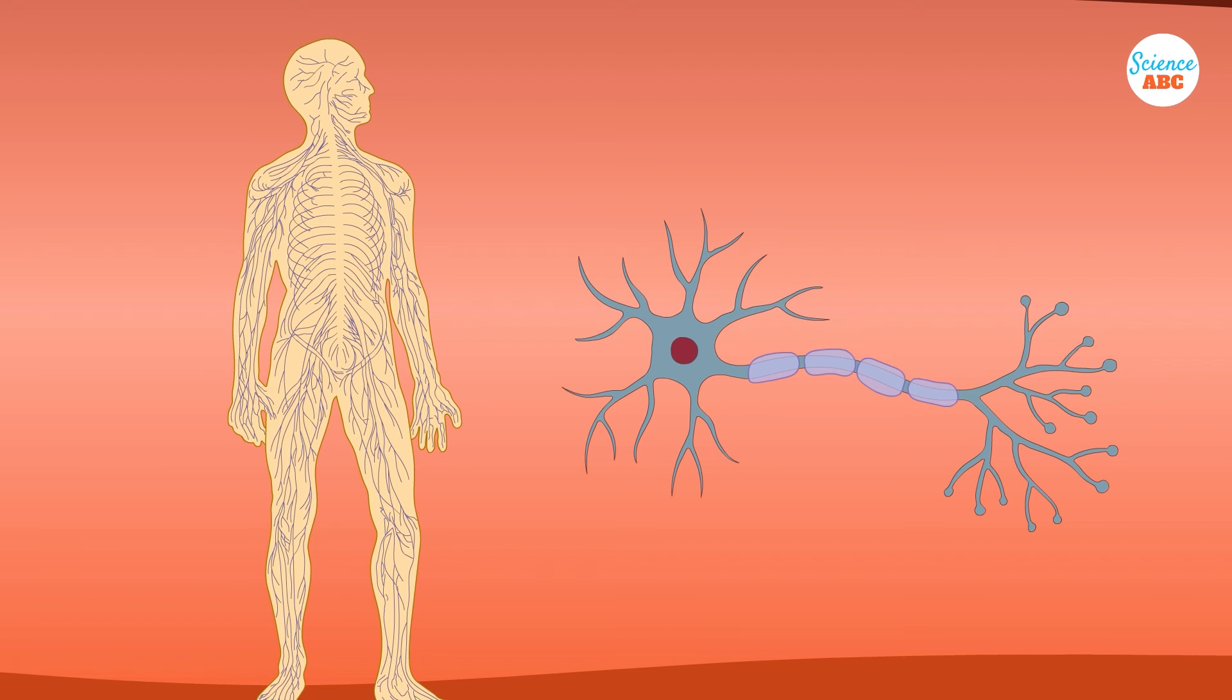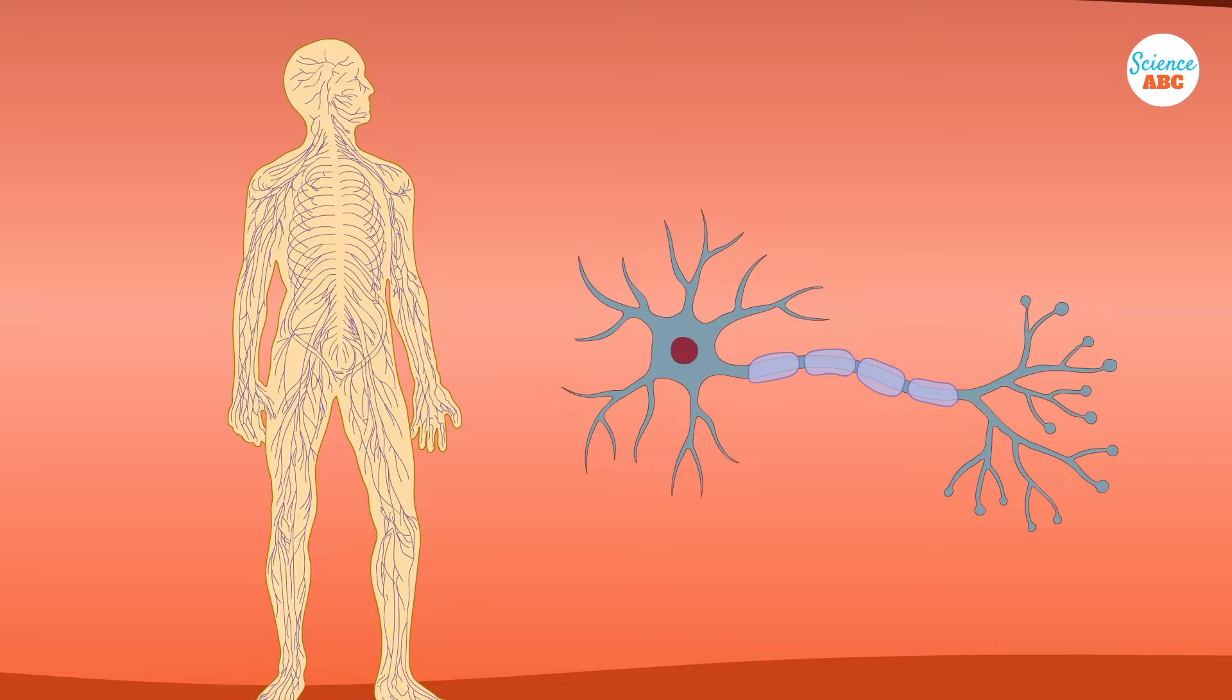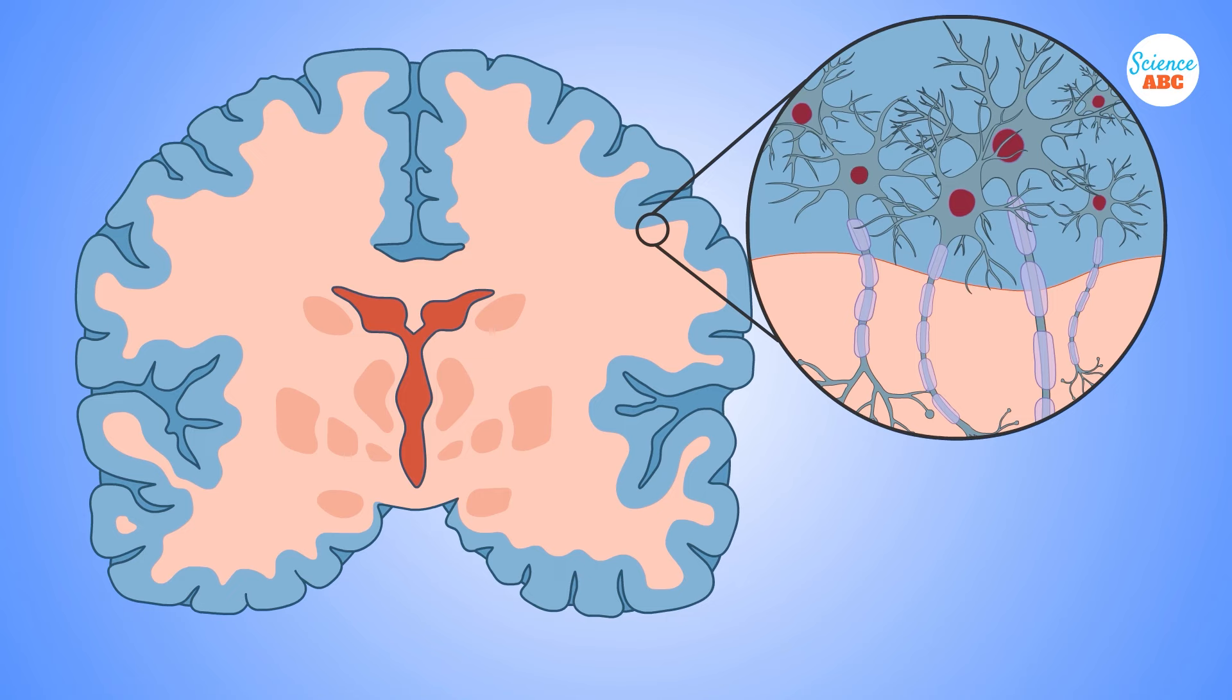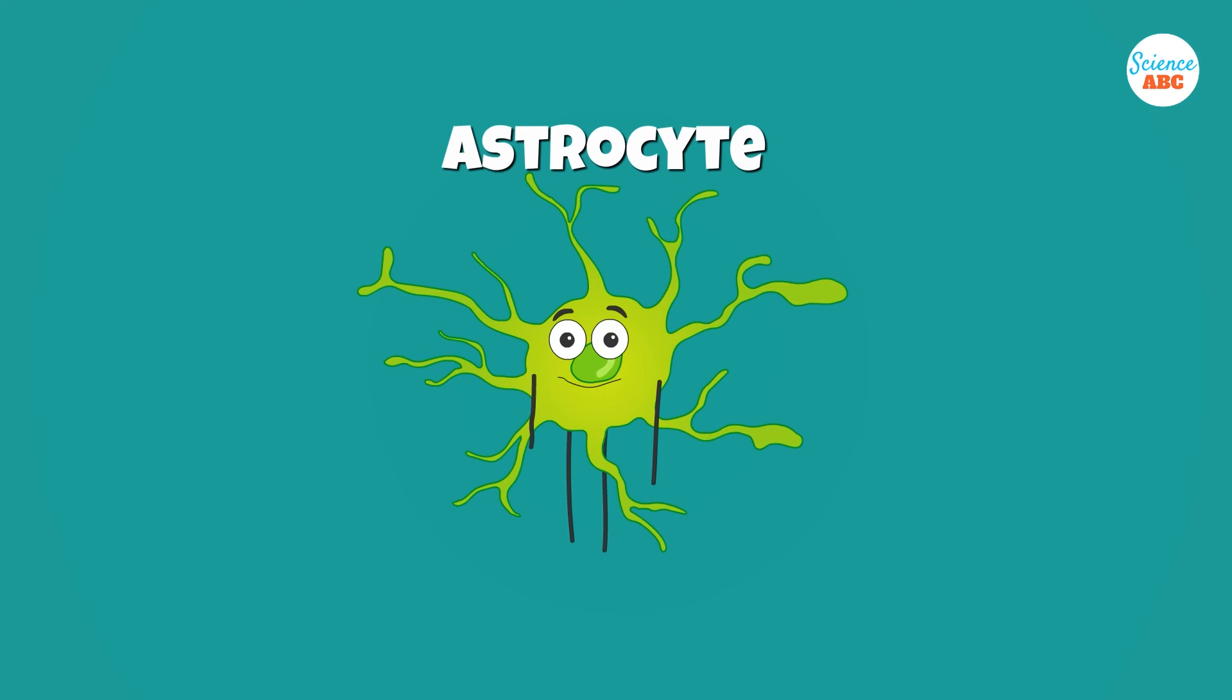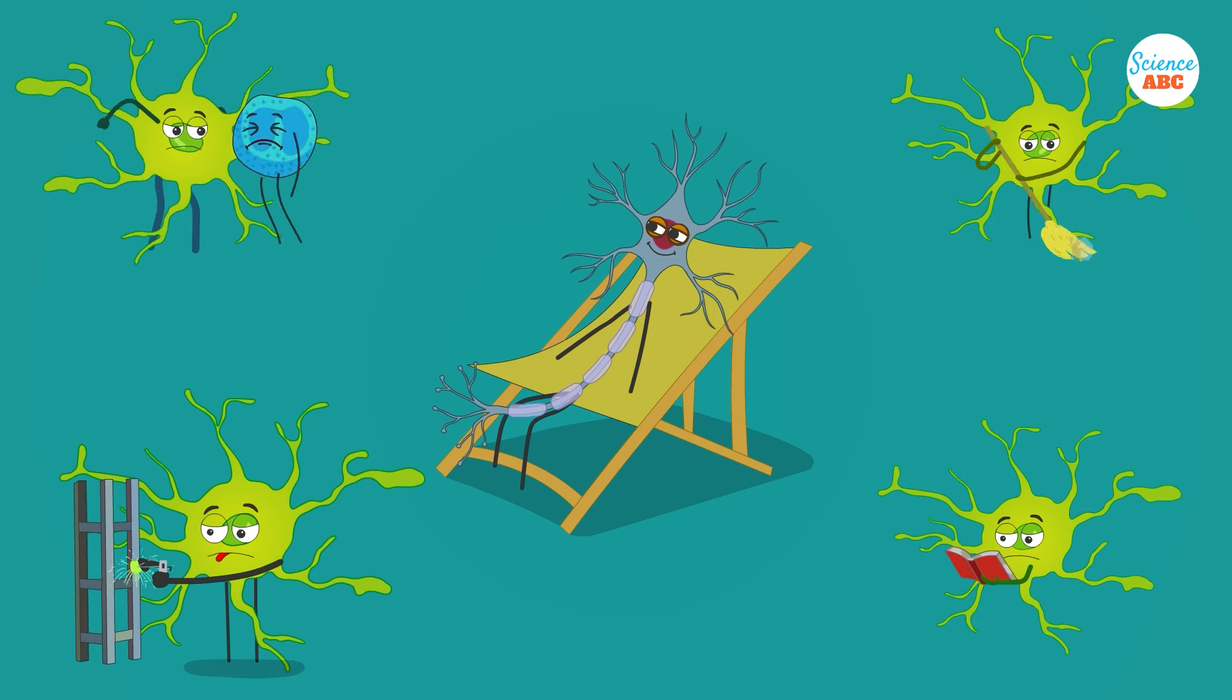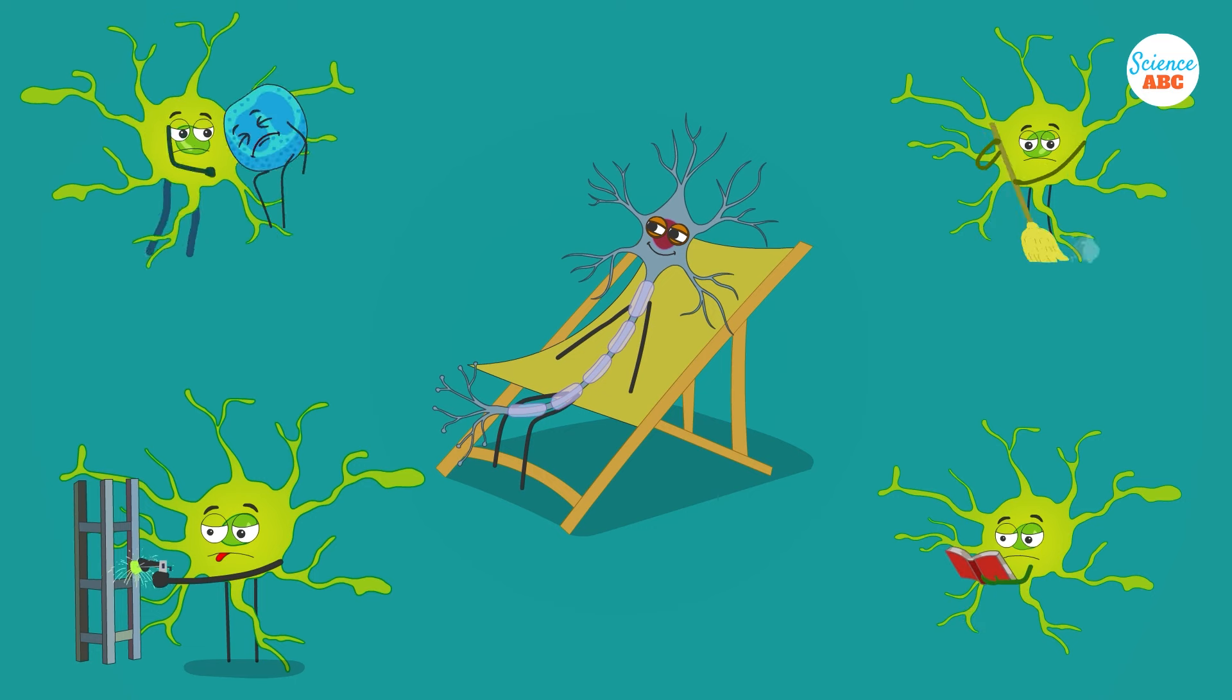Schwann cells provide insulation to neurons in the PNS. This insulation, called myelination, is why neurons appear white. Astrocytes, the second most abundant glial cells, are present in the brain and do a host of jobs to ensure that neurons can function at peak performance.